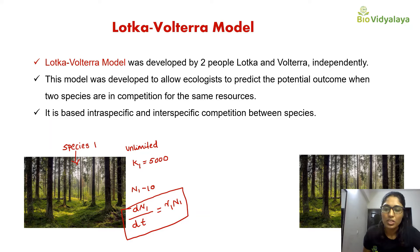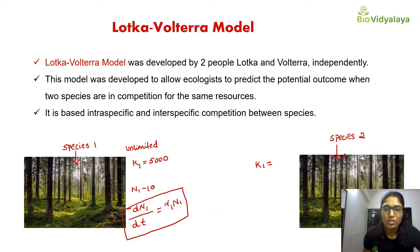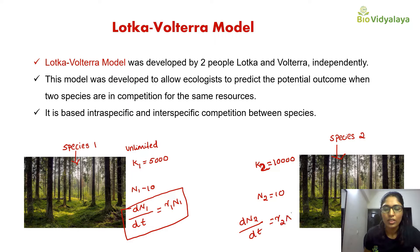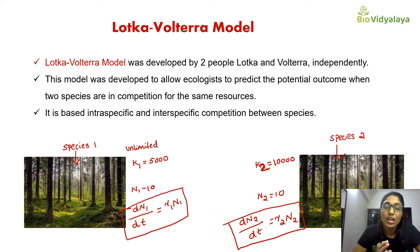Now imagine that in the same ecosystem I introduced species 2, while species 1 is absent. Resources are unlimited and the carrying capacity for species 2 is 10,000. I introduced 10 individuals. The exponential growth equation for species 2 will be: dN2/dt = r2 * N2. If resources are unlimited, the population will show exponential growth.